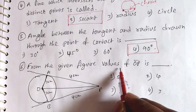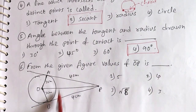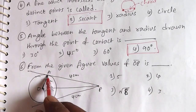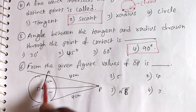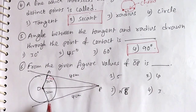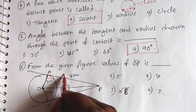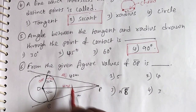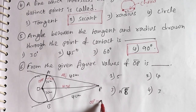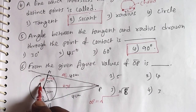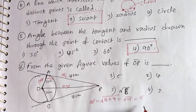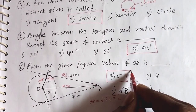Question 6: From the given figure, the value of OP is equal to what? The diagram shows two tangents from an external point. Angle OAP is 90 degrees. OP is the hypotenuse, OA is the adjacent side, and AP is the opposite side. By the Pythagorean theorem, OP equals the square root of adjacent squared plus opposite squared. So OP equals the square root of 4 squared plus 3 squared equals the square root of 16 plus 9 equals the square root of 25, which is 5. The first option is the answer.